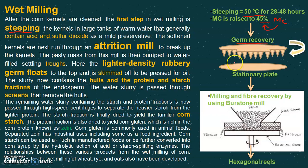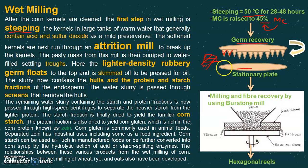Germ recovery is done with equipment having two plates — one stationary plate and one upper rotating plate. The rotating plate has conical projections which help to cut the grain into pieces and expose the germ. After loosening the germ from the grain, the whole mass is separated, as the germ has a different density — it will float and can be easily skimmed off.